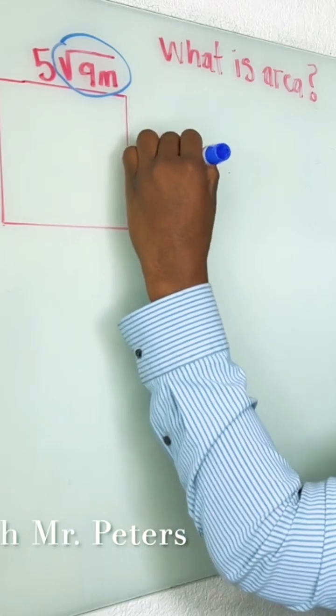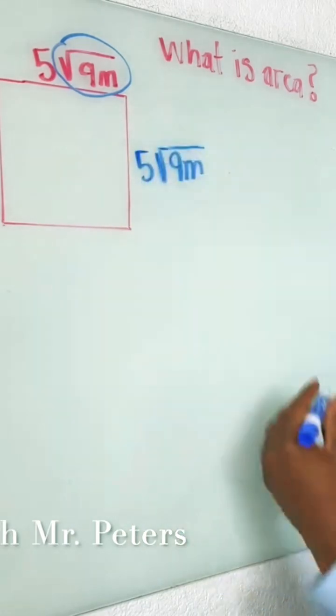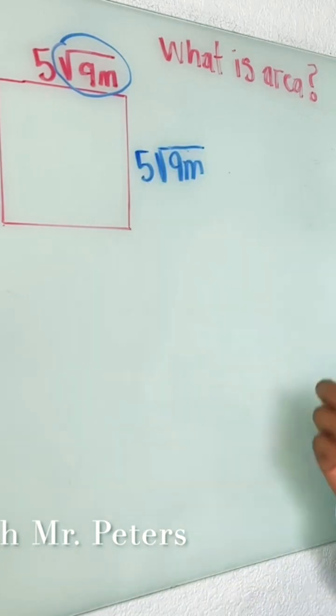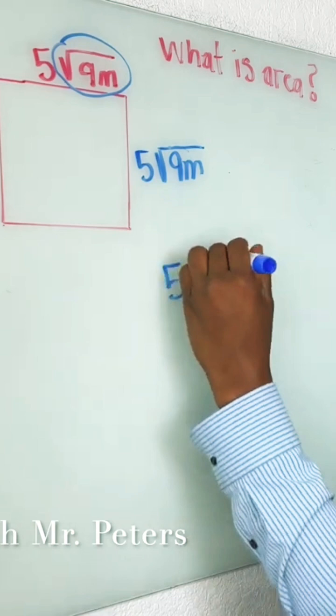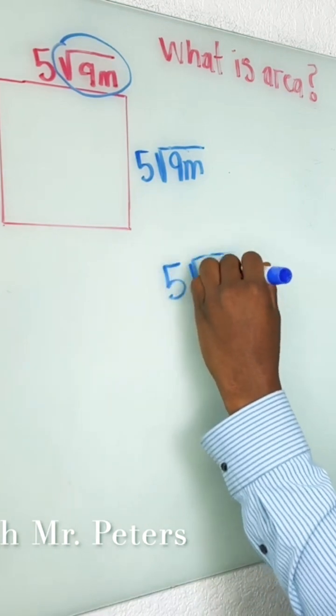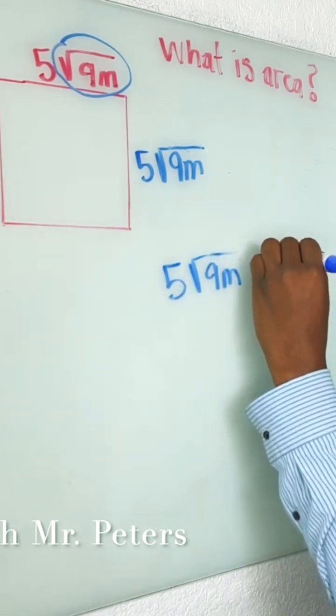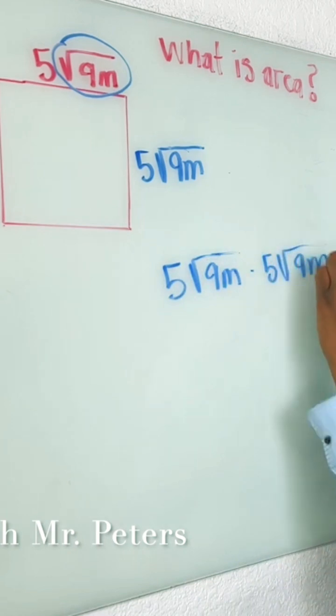The sides are 5 radical 9m because all sides have the same length, but just don't get it confused with perimeter. So we know area is length times width, and this is a very simple problem if you just remember the foundations.